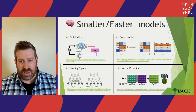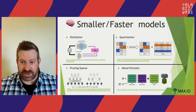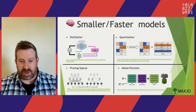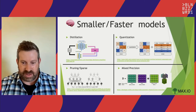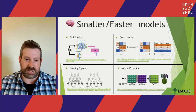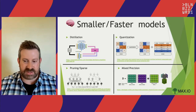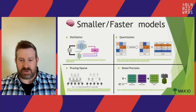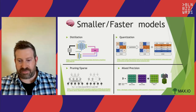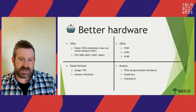Quantization reduces the precision of each parameter's values — for example, instead of 32-bit floating point you use INT8, giving you roughly a quarter of the size, since an 8-bit byte is much smaller than a 32-bit float. Pruning and sparsity involves removing network connections, weights, and parameters that aren't used — you can train a model with this in mind. Mixed precision is when you mix FP16, FP32, and INT8 values depending on what the model needs.